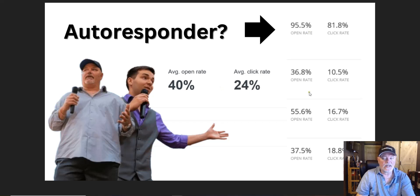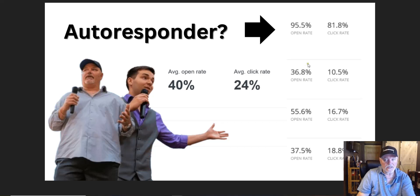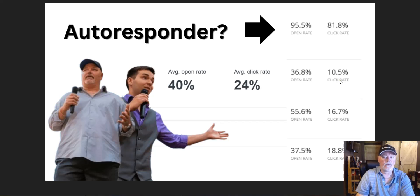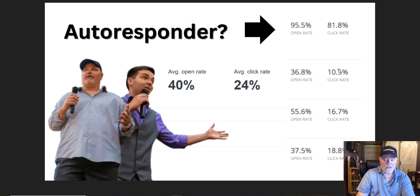One purpose of the autoresponder is to test subject lines in your 30-day email sequence. You identify which subject lines aren't getting the open rate and tweak those. Leave the high performers alone. For the ones with the lowest click-through rate, you tweak the call to action. We aim to stay in the high 20s on click-through rate — anything under 10% we definitely tweak.